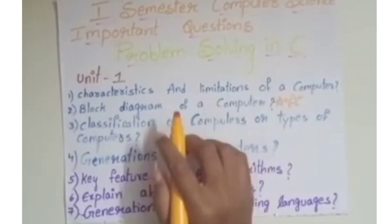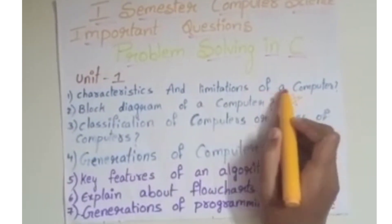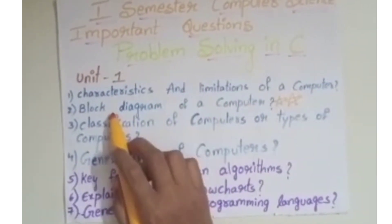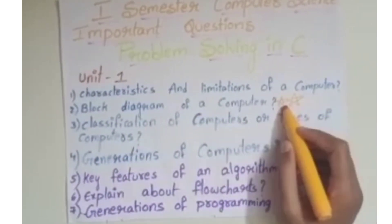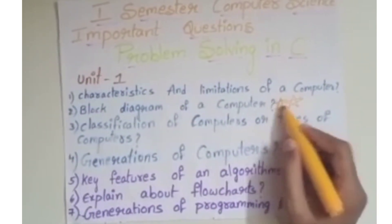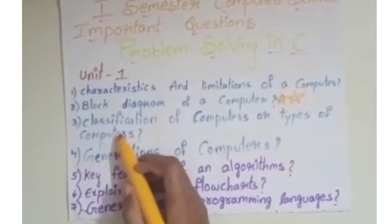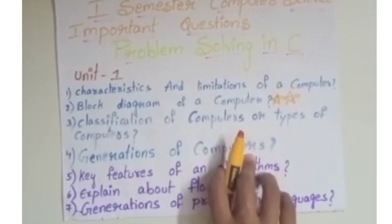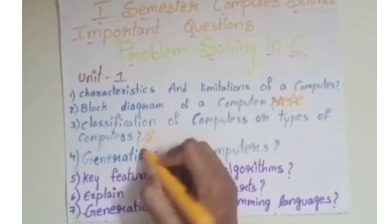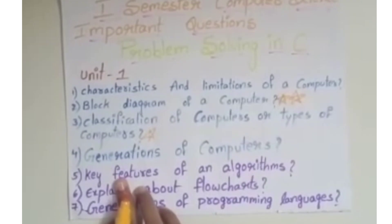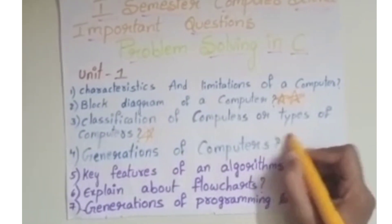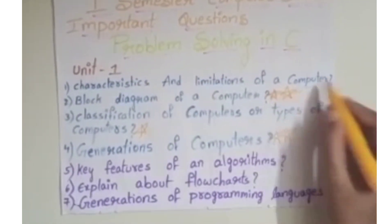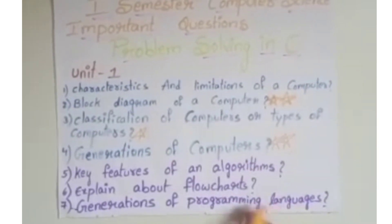Unit 1: Characteristics and Limitations of a Computer is an important question. Block Diagram of a Computer is a very, very important question — be very well prepared. Classification of Computers, or Types of Computers, is also an important question. Generation of Computers — all five generations — is a very, very important question. These two questions should be very well prepared.